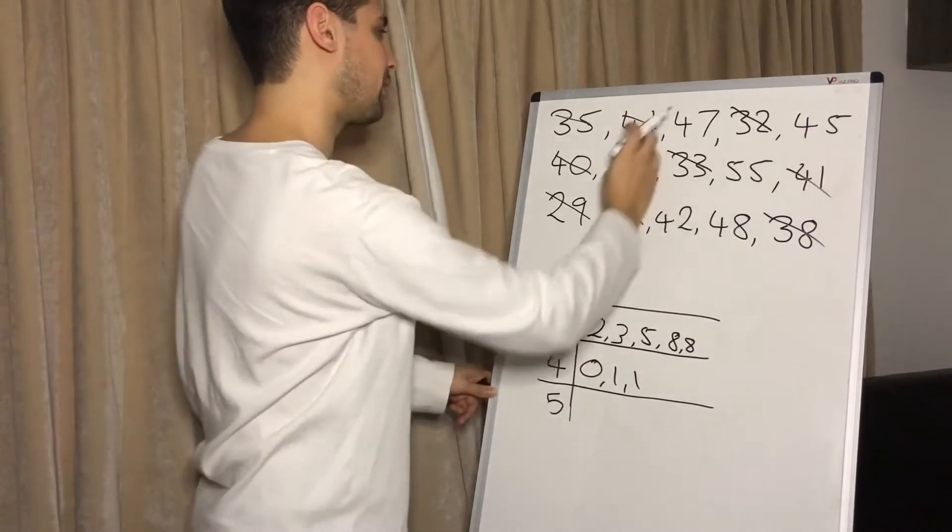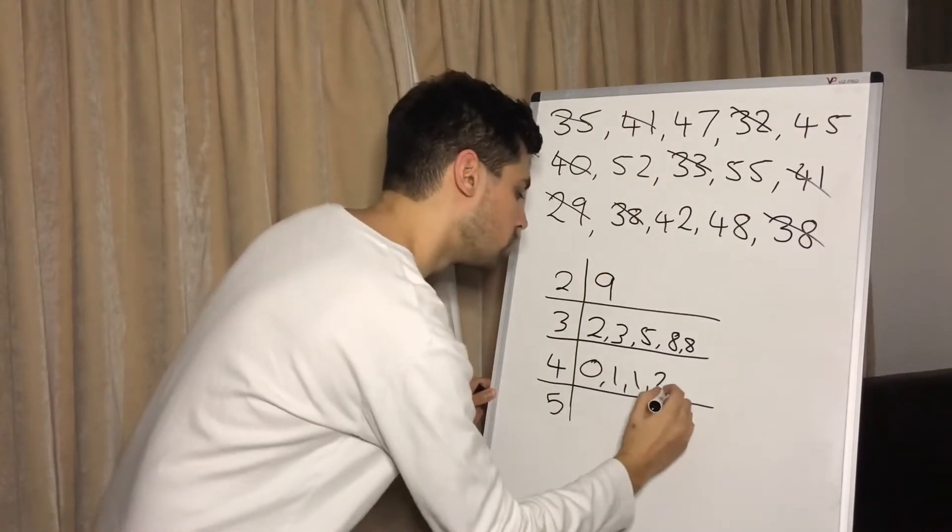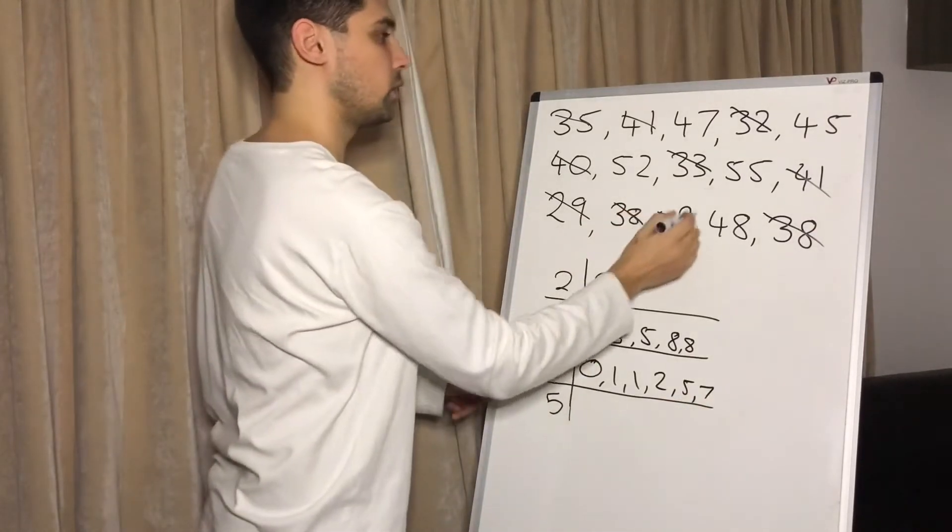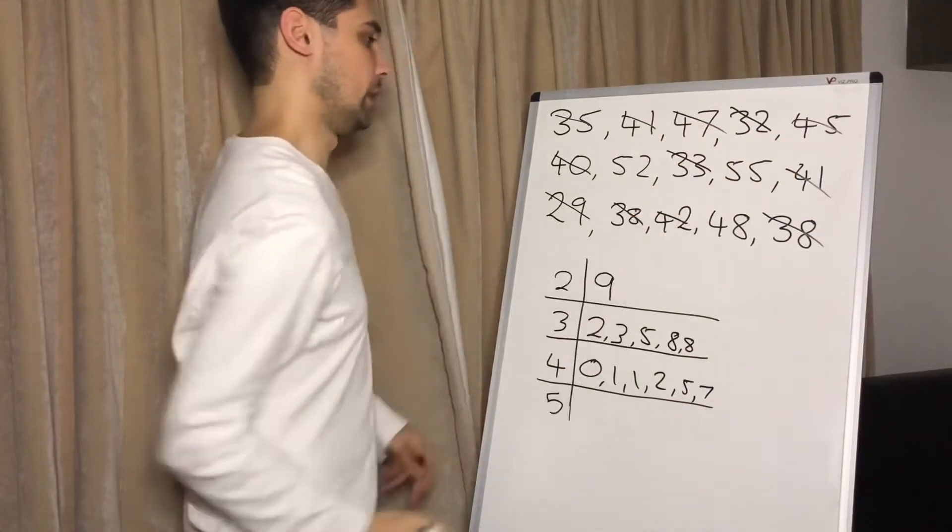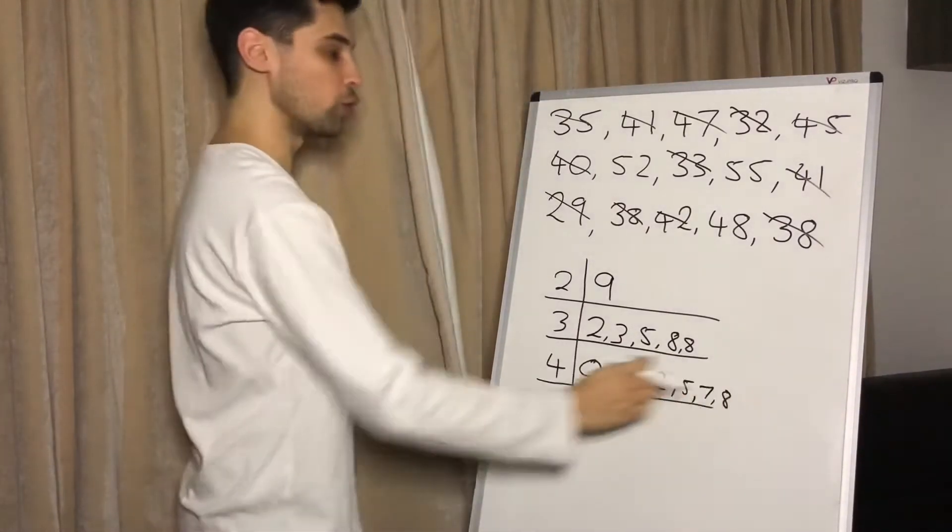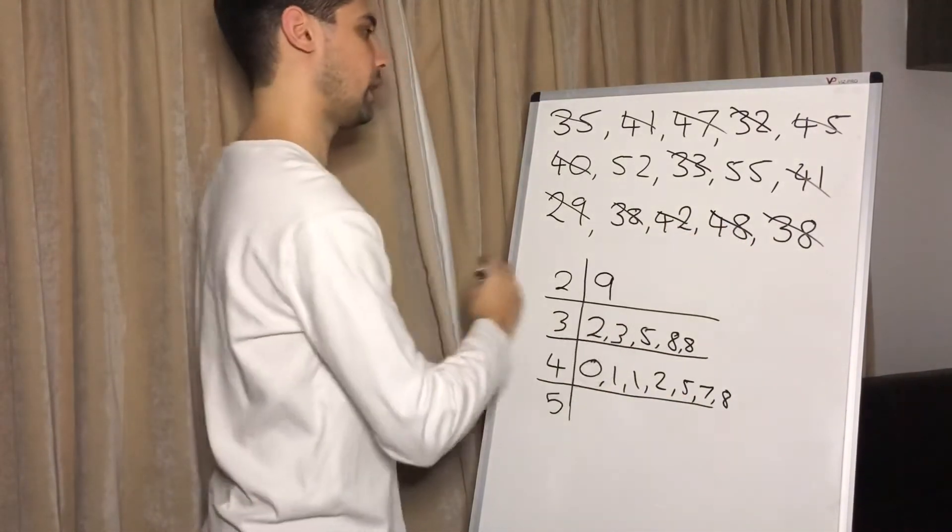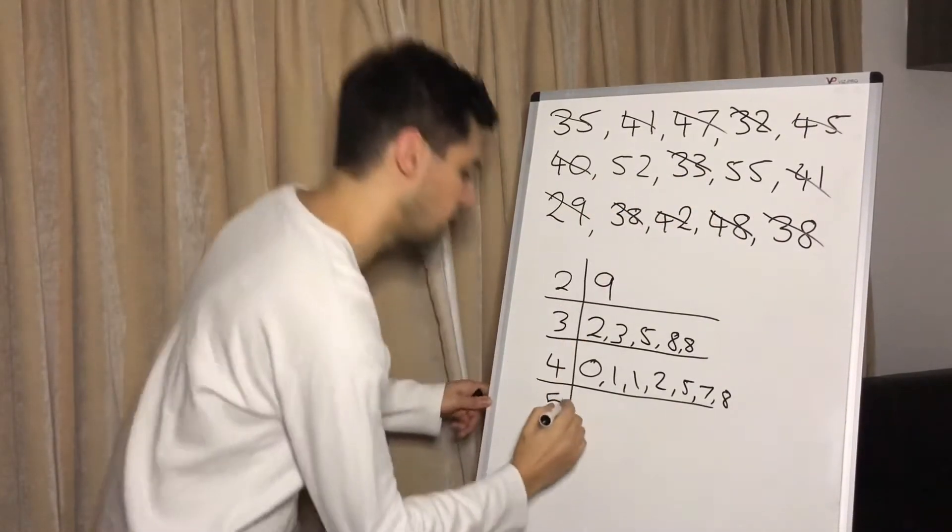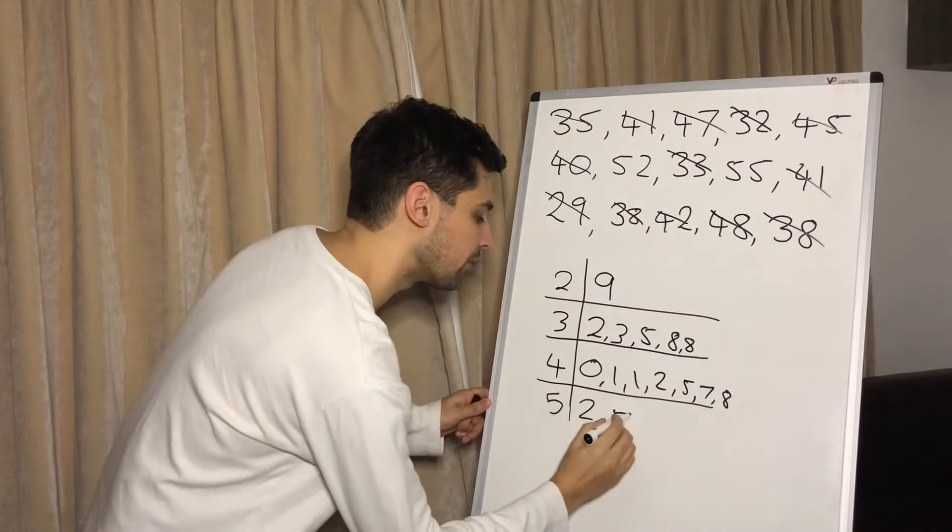Then we've got a 2, 5, 7. 2, 5, 7. 2, 5, 7. And then finally a 48. So we've got a lot in the 4 row there. And then it looks like there's only two more, I think a 52 and a 55. So we'll do a 2 and a 5.